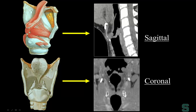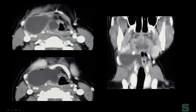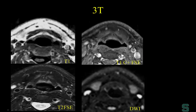All of our studies now get sagittal and coronal reformats. It used to take hours and be printed on hard copy, but now it takes just seconds. The reformats really help when evaluating spread patterns. Here's a nice example — a laryngocele on coronal images showing the internal component going through the thyrohyoid membrane, with a cystic component extending outside — a complex laryngocele.